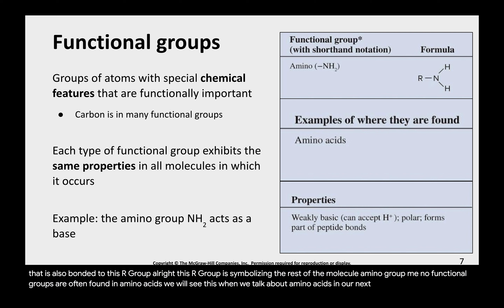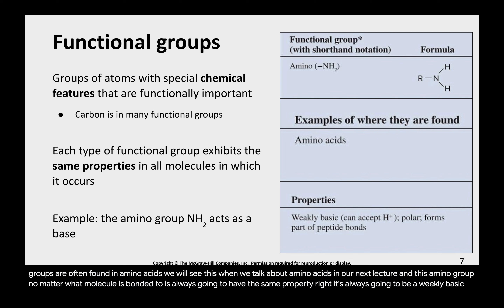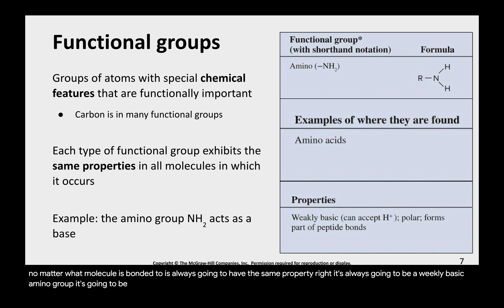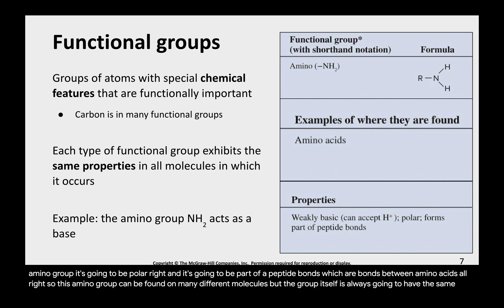This amino group, no matter what molecule it's bonded to, is always going to have the same properties — it's always going to be weakly basic, it's going to be polar, and it's going to be part of peptide bonds, which are bonds between amino acids. So the amino group can be found in many different molecules, but the group itself always retains the same properties.